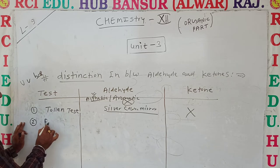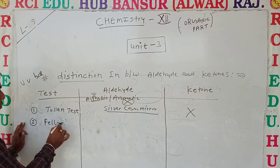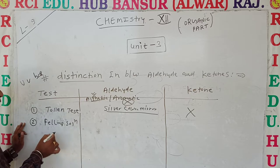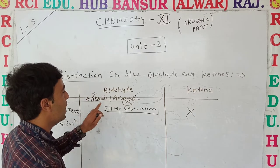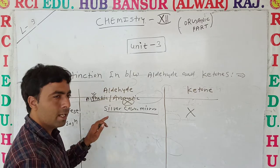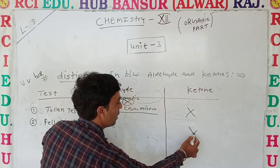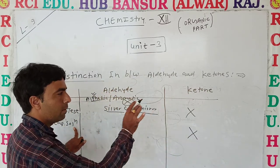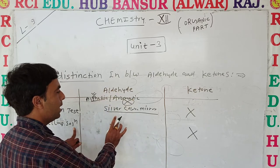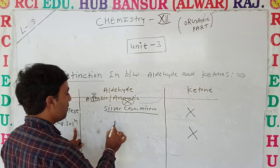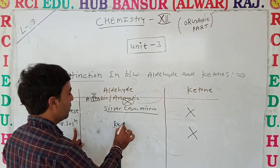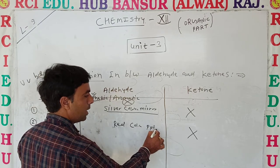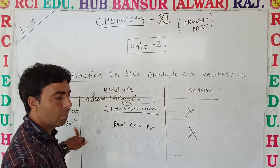In addition to this, there is Fehling's solution — Fehling solution A and B. In their presence, aldehydes give a reaction but ketones do not react with Fehling's solution. Only aldehydes give this reaction, forming red color precipitates.